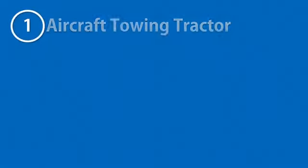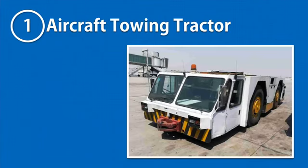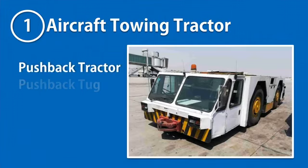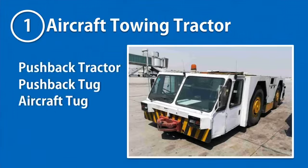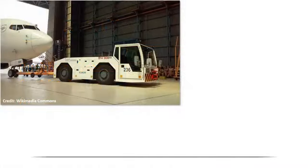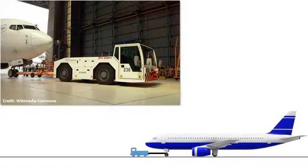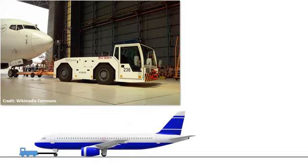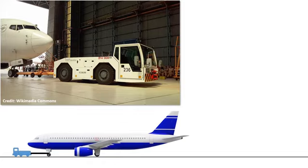The first is the aircraft towing tractor, also known as pushback tractor, pushback tug, and aircraft tug. It is a heavy duty vehicle used for towing an aircraft when the aircraft's engines are off.